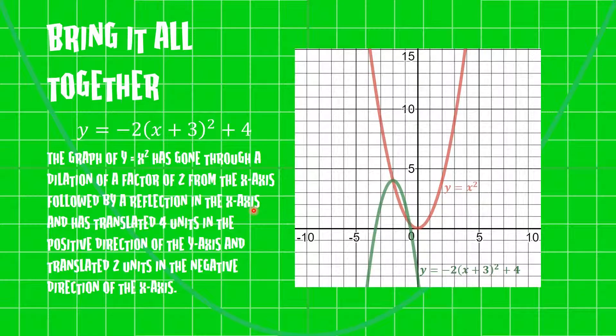Now we move on to translations. It doesn't matter if we state the x or y translations first, so long as we mention both. We write: it has translated four units in the positive direction of the y-axis and translated two units in the negative direction of the x-axis. And that's how we get our full description.